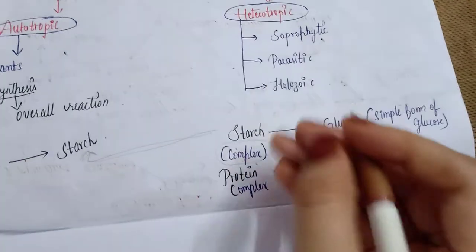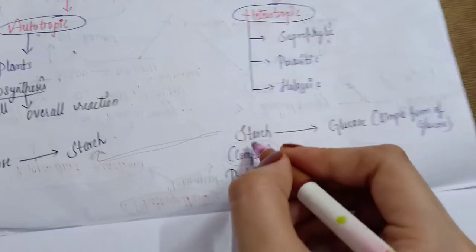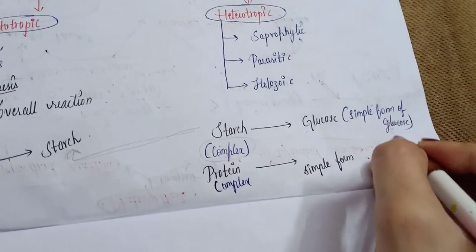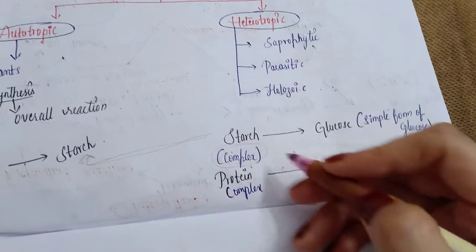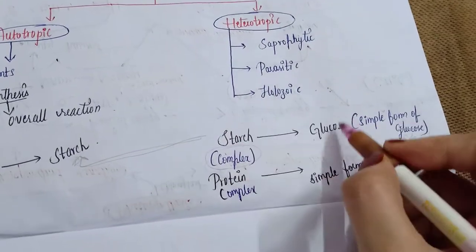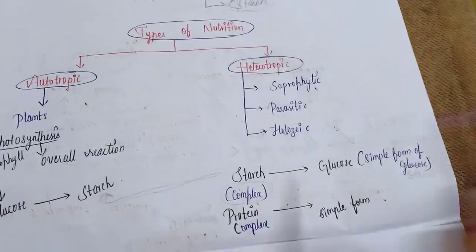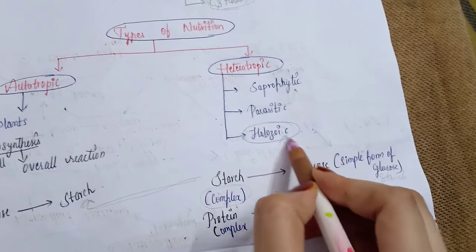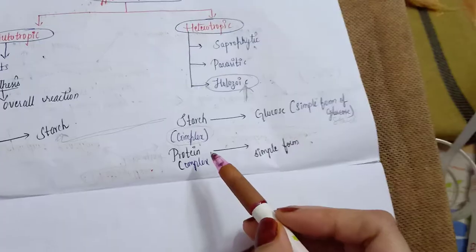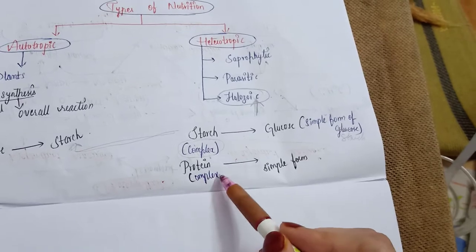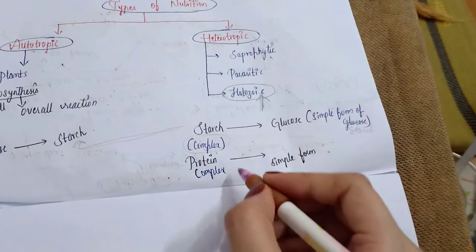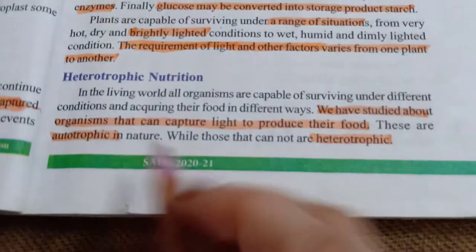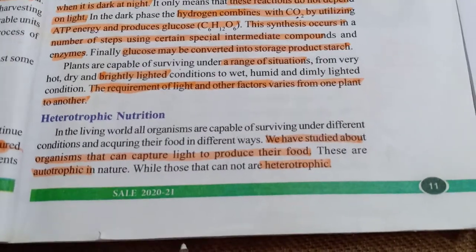Heterotrophs — including human beings — eat plants and use the starch. Since starch is very complex, our body is unable to digest it directly. So in our body, starch is converted into its simple form, which is glucose. In order to digest starch and get energy, the body must convert starch into glucose. This process occurs in heterotrophic organisms. Human beings, who come under holozoic nutrition, also take in proteins and carbohydrates — all complex compounds — which must be converted into simple forms to be digested.